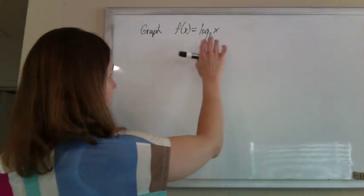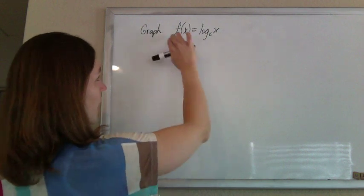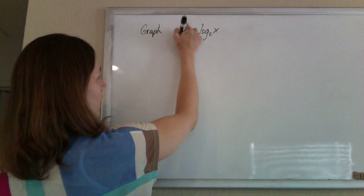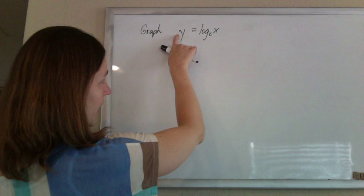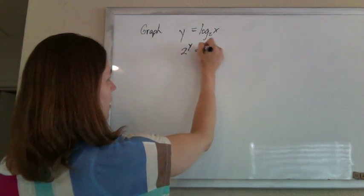Since we're still not completely comfortable with logs, I'm going to rewrite this as its exponential. First I'm going to say f of x is the same thing as y, and so now if I write this as exponential form, the base 2 to the power y should equal x. So 2 to the y equals x.